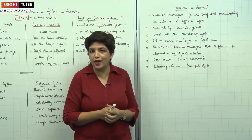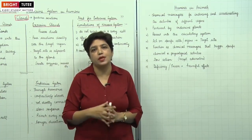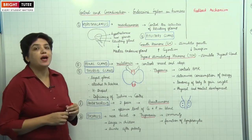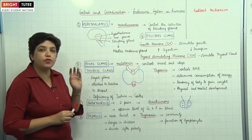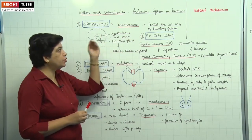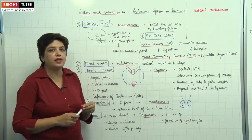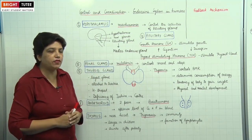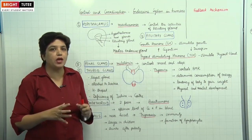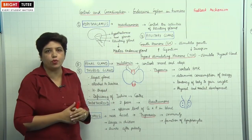Now let us study all the endocrine glands in the body. The first is the hypothalamus, present in the brain. It is a very important gland that secretes certain neurohormones, which are passed on to the pituitary gland to control its activities. The second is the pituitary gland, present near the hypothalamus in the brain. It is known as the master endocrine gland because it releases many hormones which in turn control the activities of other glands and stimulate them to work properly.